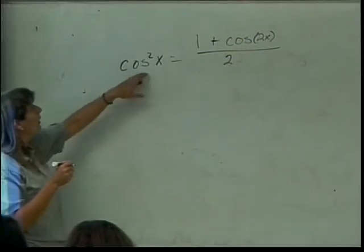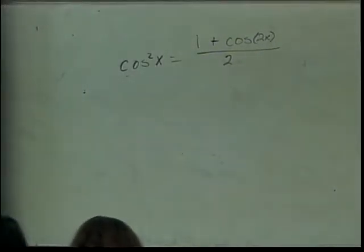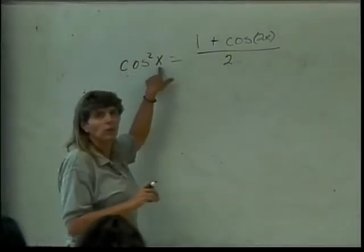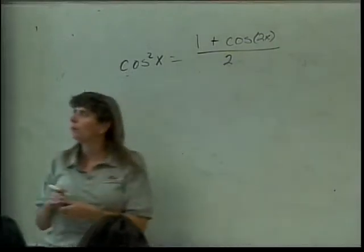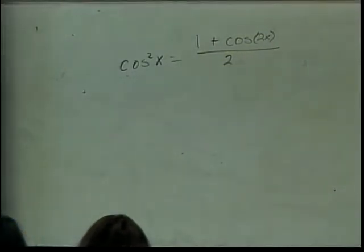So, instead of x, what do I have here? Oops. I have a 5x. So, what did I do to the x here? I multiplied it times 2, so I'm going to do that to the 5x here.